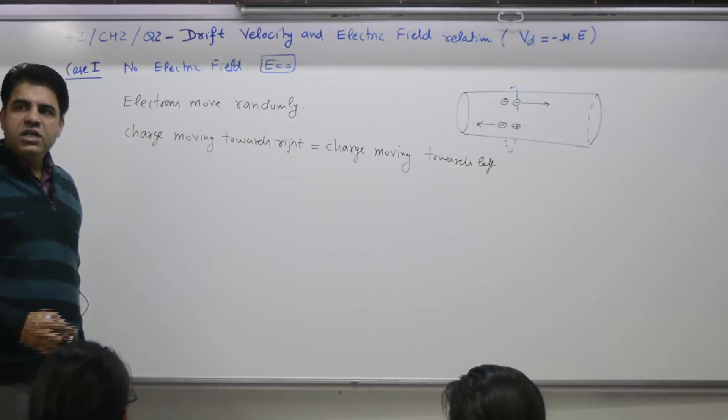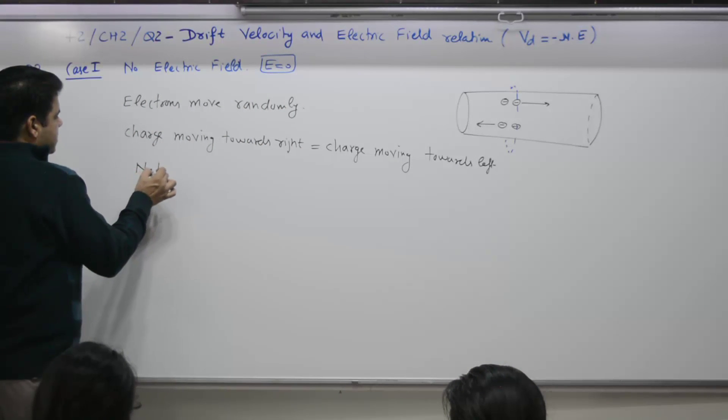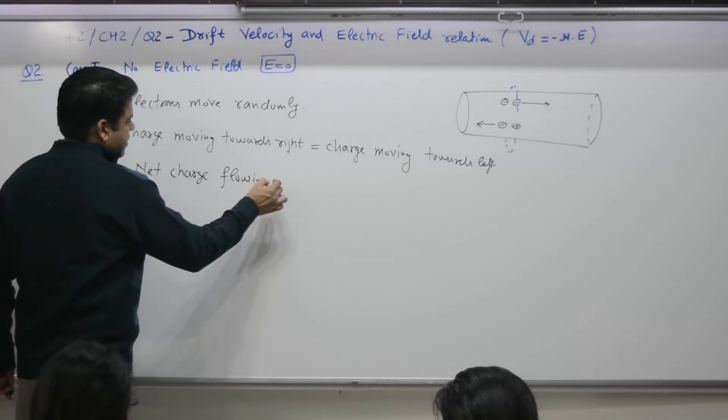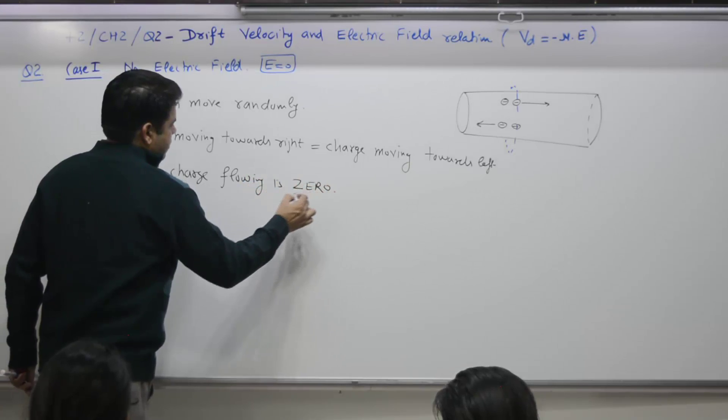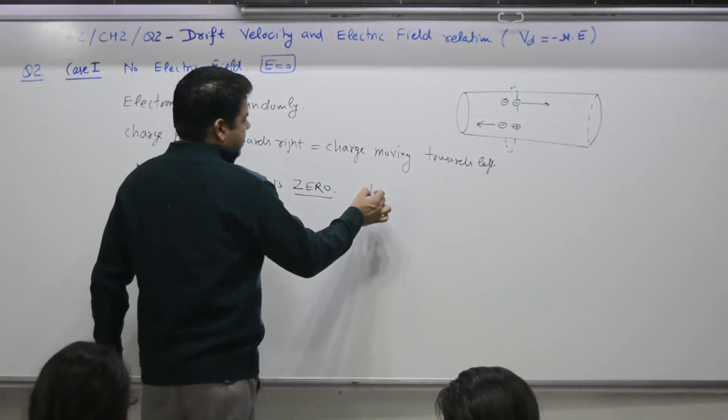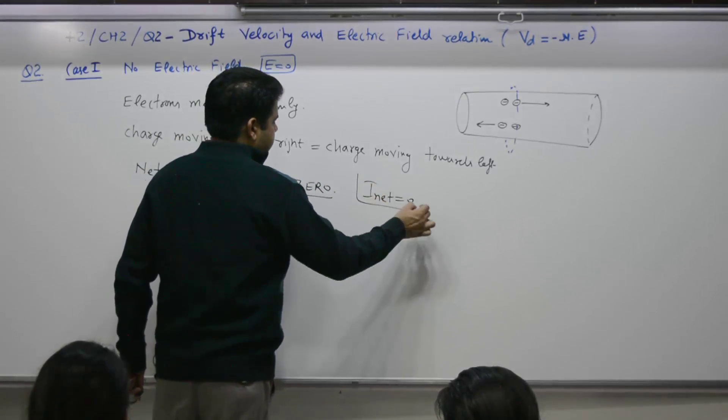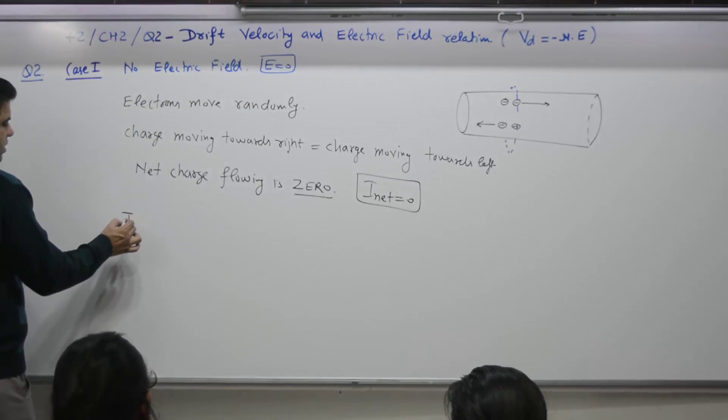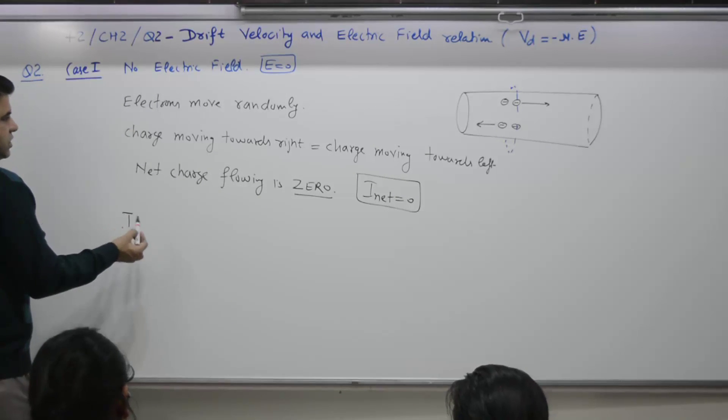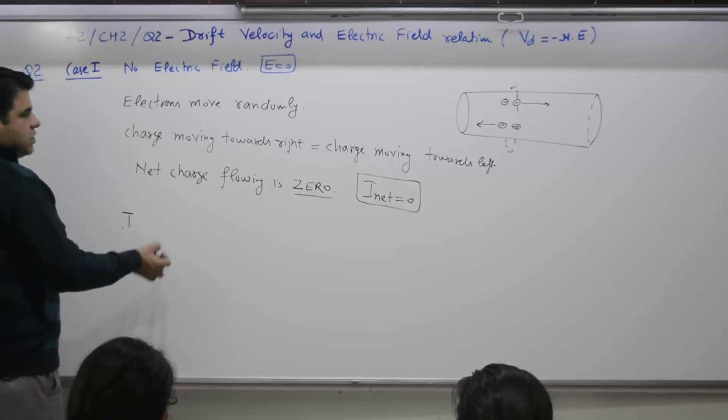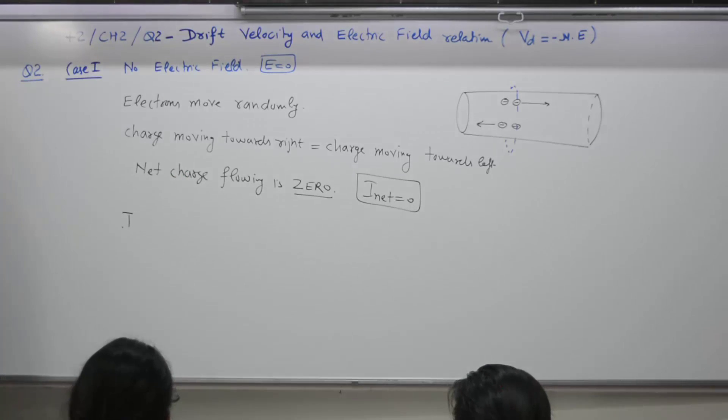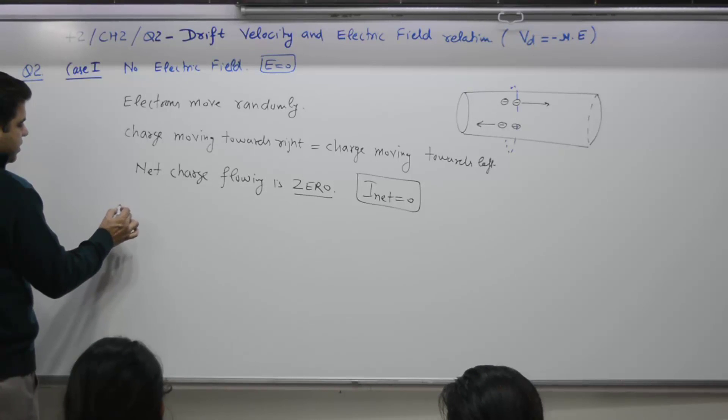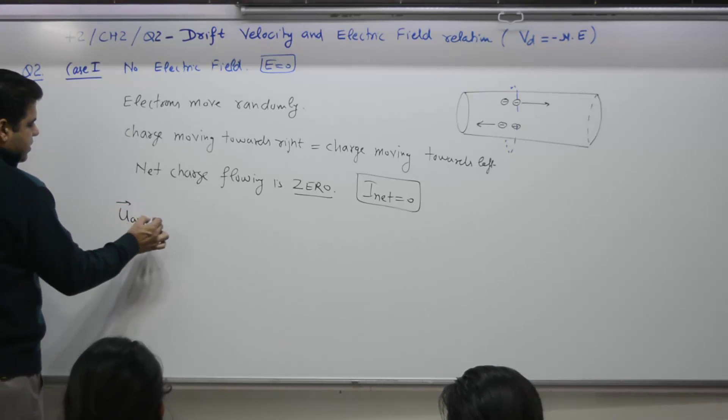Net charge flowing is zero. Net current comes out to be zero. Current or average velocity - the first part is average velocity.